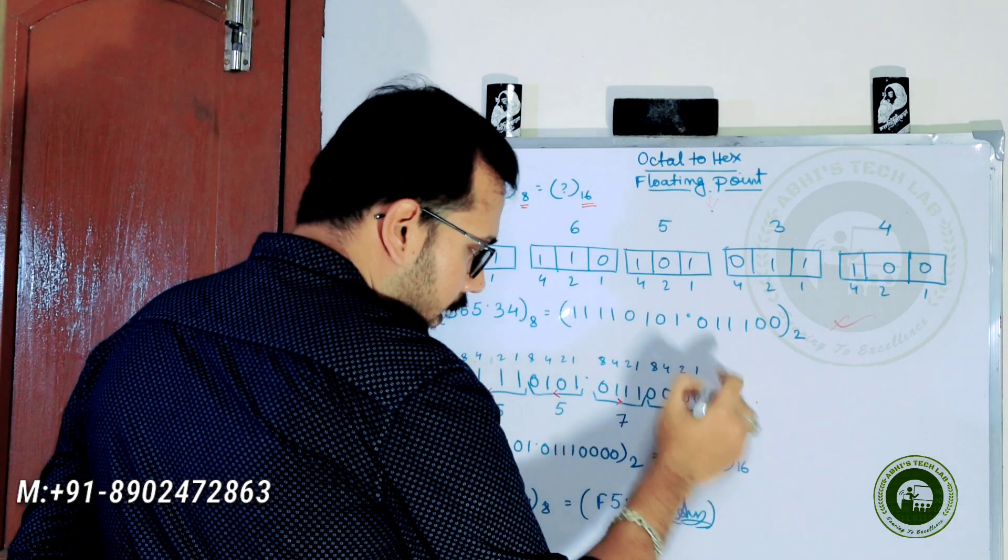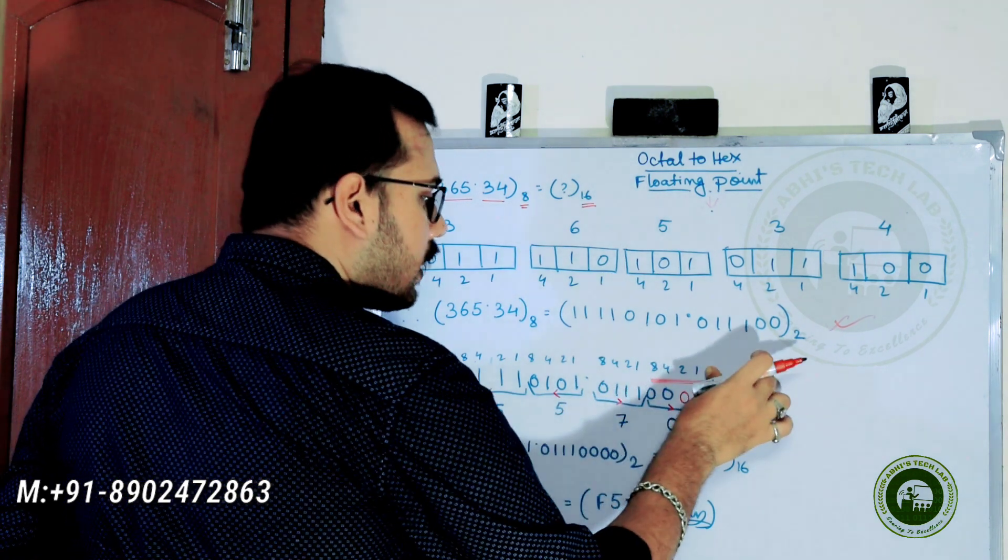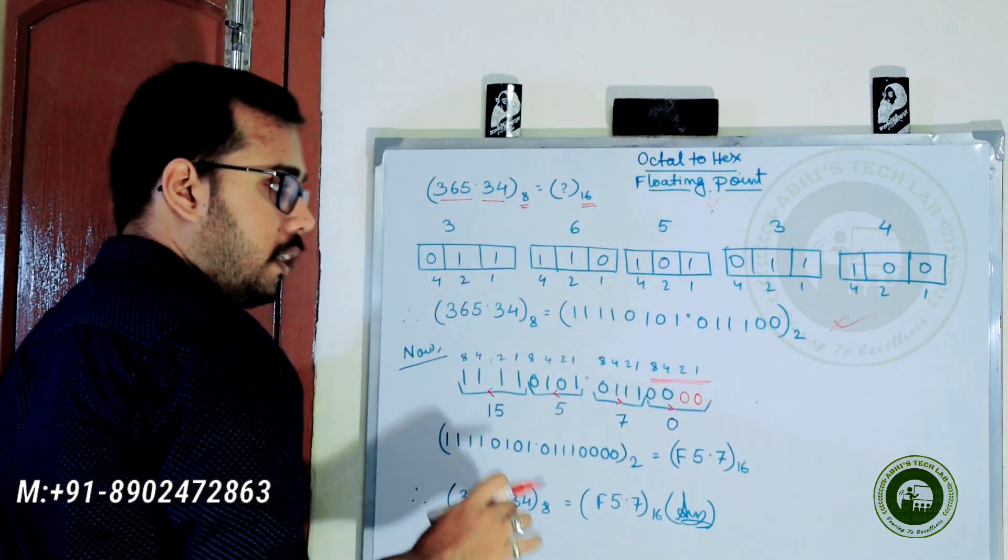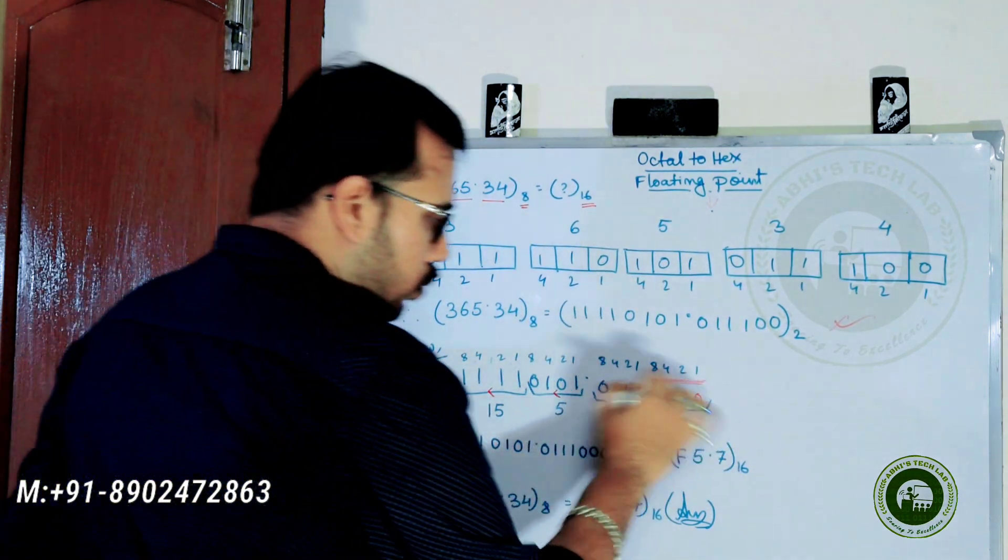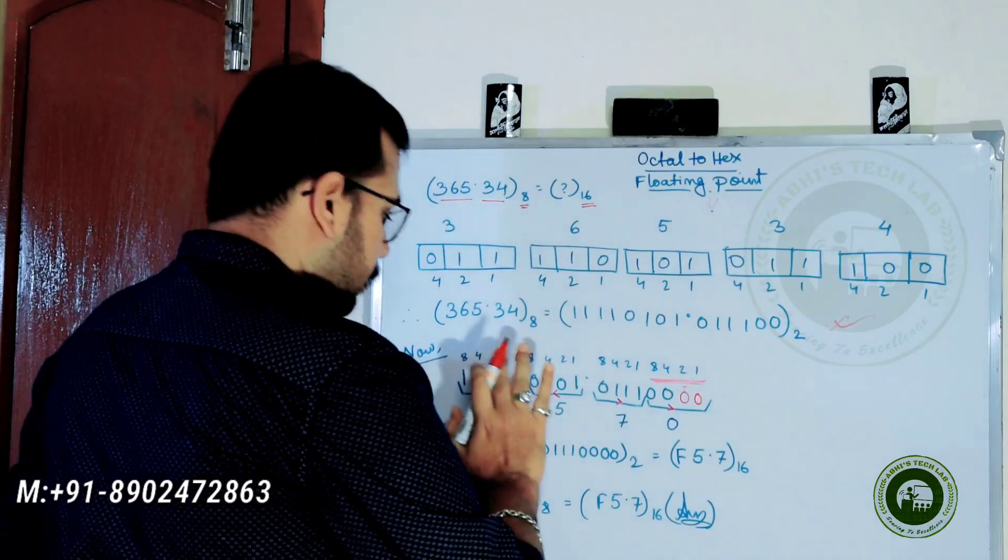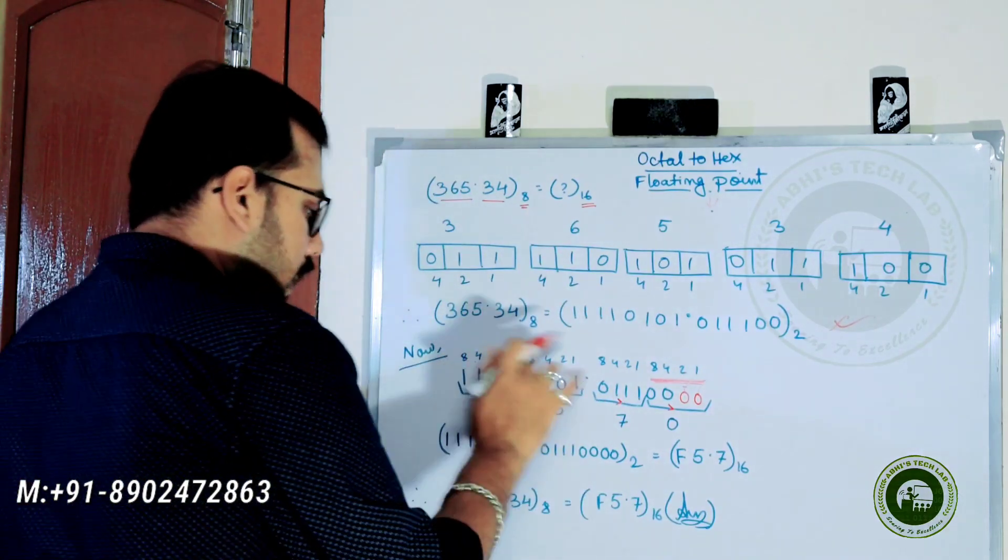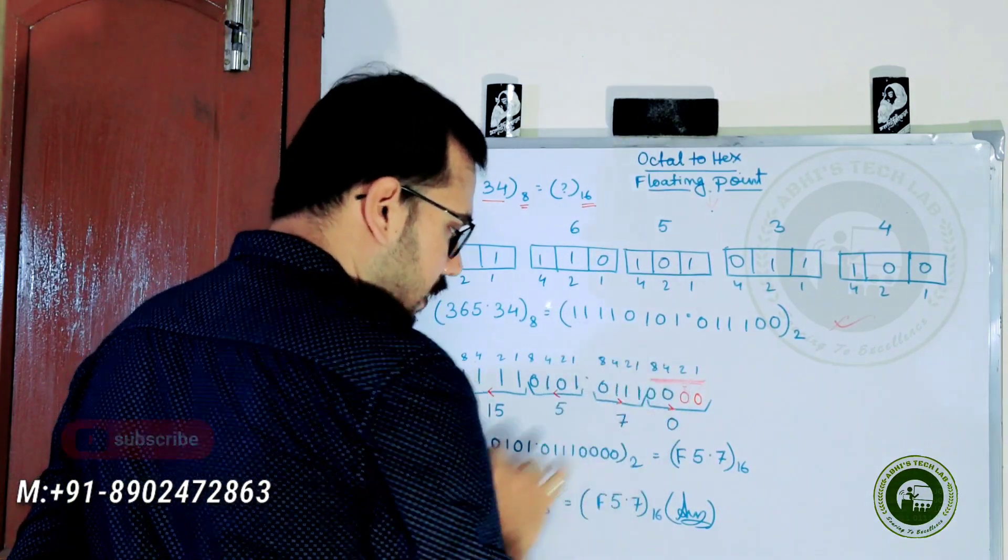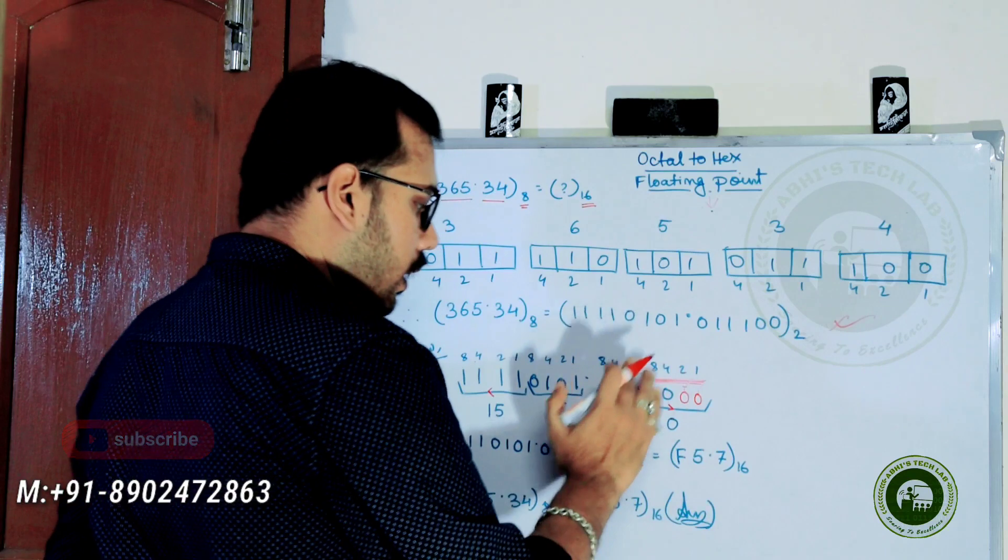With binary weighted code 4-2-1, 4 plus 2 equals 6, plus 1 equals 7. Ultimately 0, logically because of the pointer.